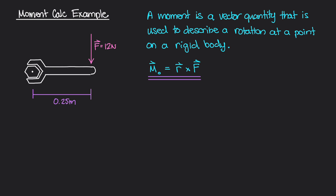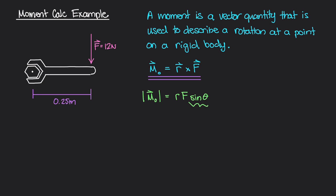The magnitude of the moment is the scalar quantity R times F times the sine of the angle theta between them. Because the position vector and force vector are perpendicular, the angle theta is simply 90 degrees. The sine of 90 degrees is 1, so the magnitude of this moment is simply R times F.